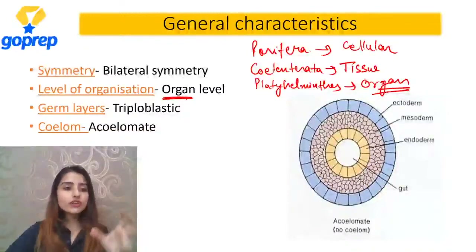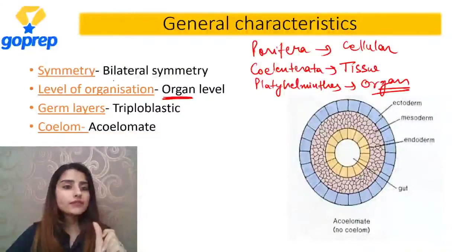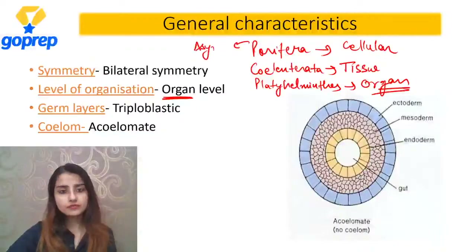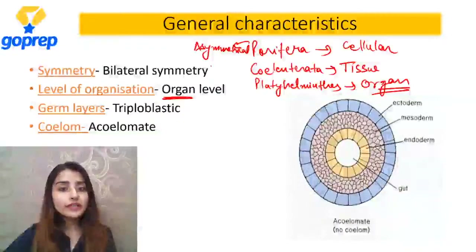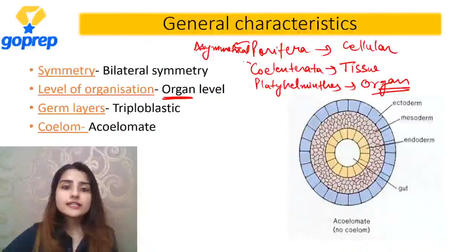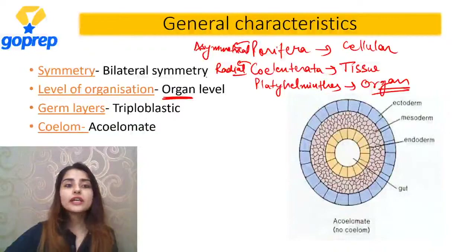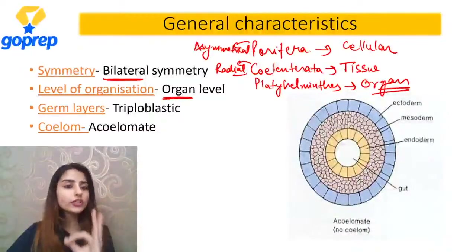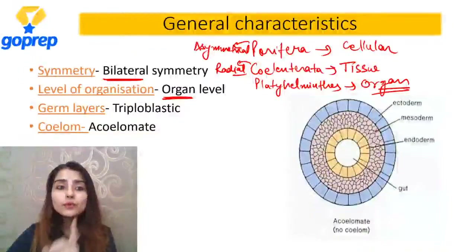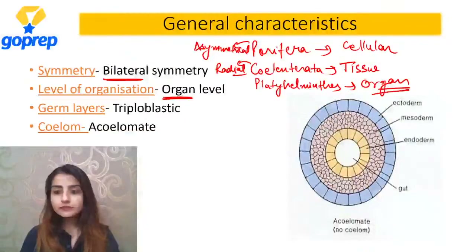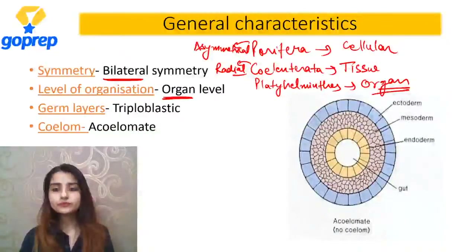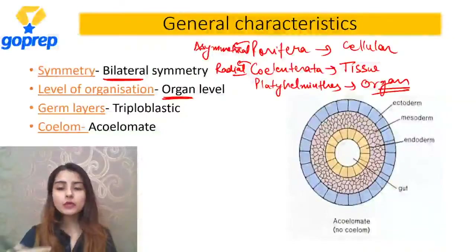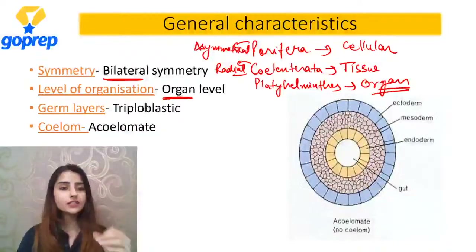System nahi hoga - sirf organ level of organization. Group of organs. And the type of symmetry: Porifera ke paas asymmetrical thi. Coelenterata mein radial symmetry thi. Platyhelminthes mein usse advance hogi - bilateral symmetry. That means body can be divided into equal halves by only one plane passing through the center. Ek hi plane ke through left or right side mein body ko divide kar sakte ho.